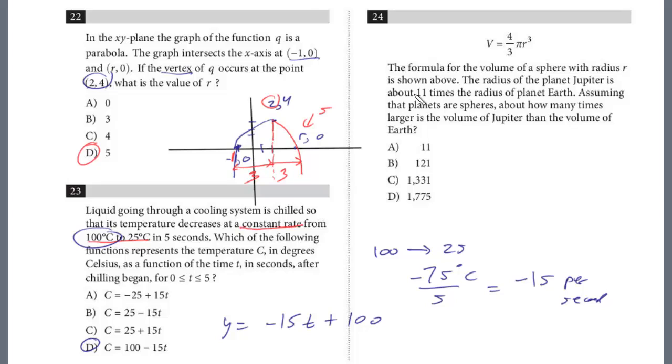Let's look at the last question, number 24. The formula for the volume of a sphere with radius r is shown above. The radius of the planet Jupiter is about 11 times the radius of planet Earth. Assuming that the planets are spheres, about how many times larger is the volume of Jupiter than the volume of Earth? This is a very common question. They're giving us this formula for the volume of a sphere.